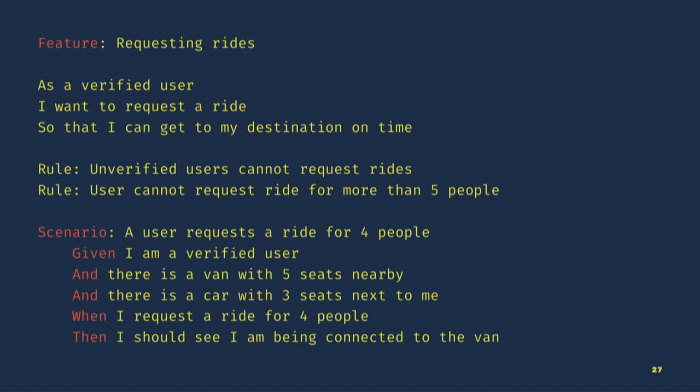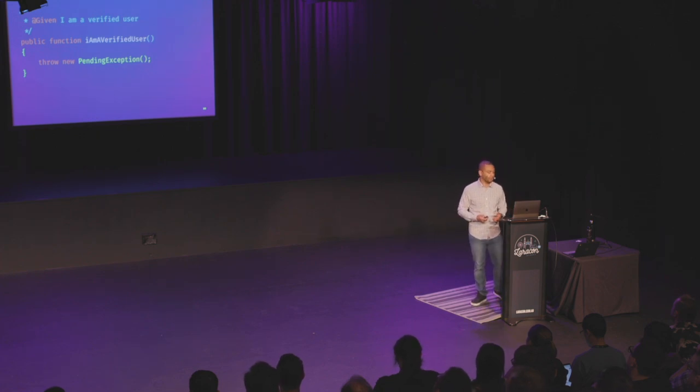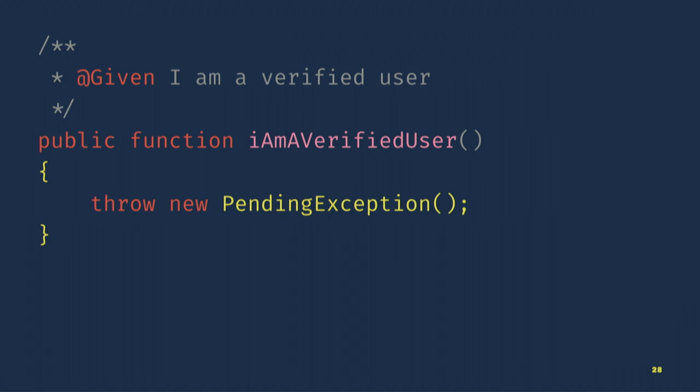The 'and' keyword in scenarios — you can chain those under given, when, and then. It's just that given, when, then are the main keywords. Inside your feature context file, you'd have something like this: a function called 'I'm a verified user,' with a docblock annotation that says 'Given I'm a verified user' — that maps to our first scenario sentence. Those annotations are how Behat knows to map your scenario sentences to the feature context file. It's throwing a pending exception because you need to implement it. We could implement it using a factory to create a verified user and set it as the acting user.